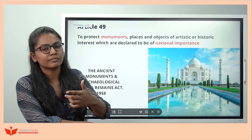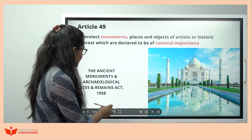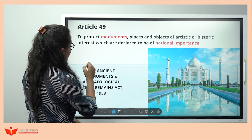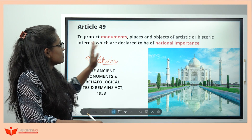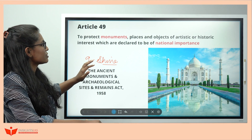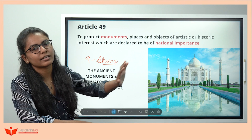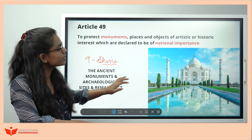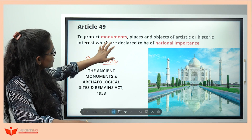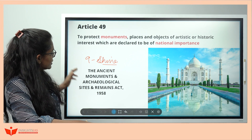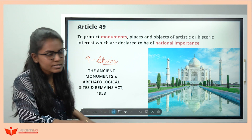For Article 49 — rhyme 9 with 'shine.' Article 49 says protect monuments, places and objects of artistic or historic interest declared of national importance. Remember: 9 — Taj Mahal ko shine karna hai — Taj Mahal is our biggest monument. The government enacted the Ancient Monuments and Archaeological Sites and Remains Act 1958 to comply with Article 49.